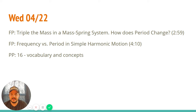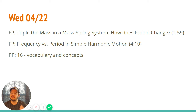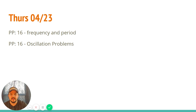Wednesday, two more Flipping Physics videos. If we triple the mass on a spring-mass system — a block on a spring going back and forth — how does that affect the period? And then, what is the difference between the word frequency and the word period in simple harmonic motion? They're related, but not the same. Then we'll end with a Positive Physics unit 16 vocab and concepts to help drill some of those ideas from the videos.